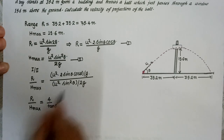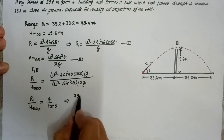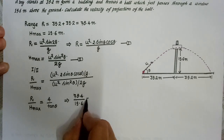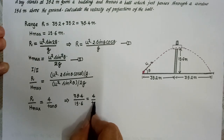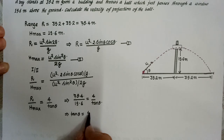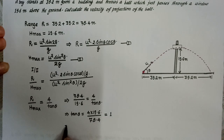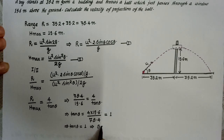इस equation को simplify करते हैं। R = 78.4 और maximum height = 19.6 रखने पर: 78.4 / 19.6 = 4/tanθ। यहाँ से tanθ = 4 × 19.6 / 78.4 = 1। तो tanθ = 1, जिससे θ = 45°। इस प्रकार हमने angle of projection find out कर लिया।